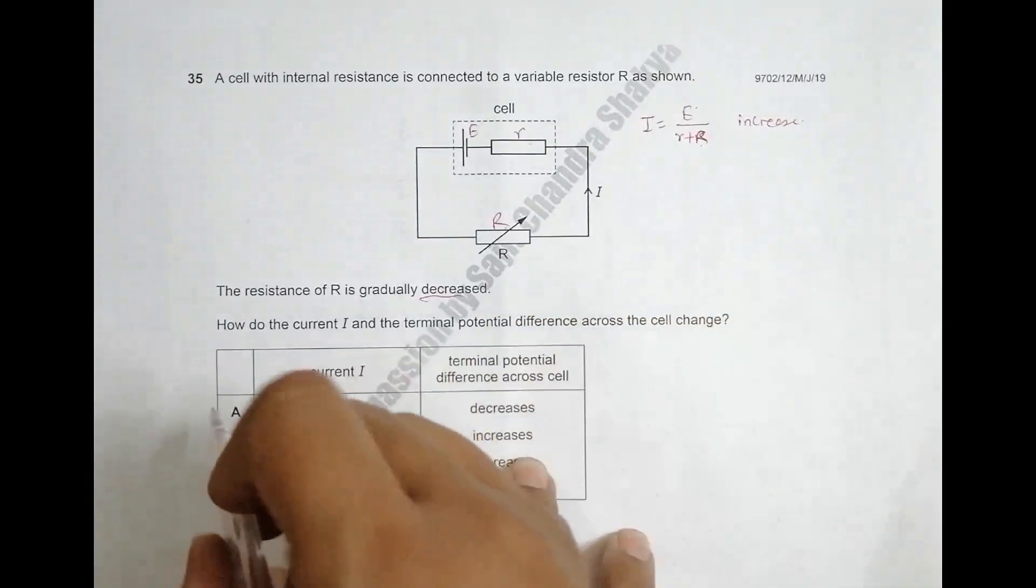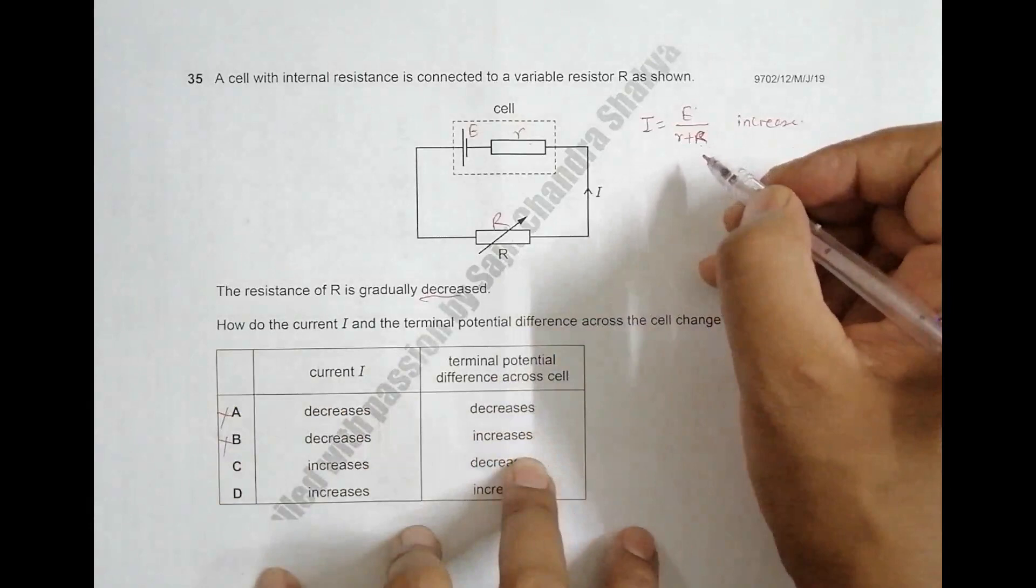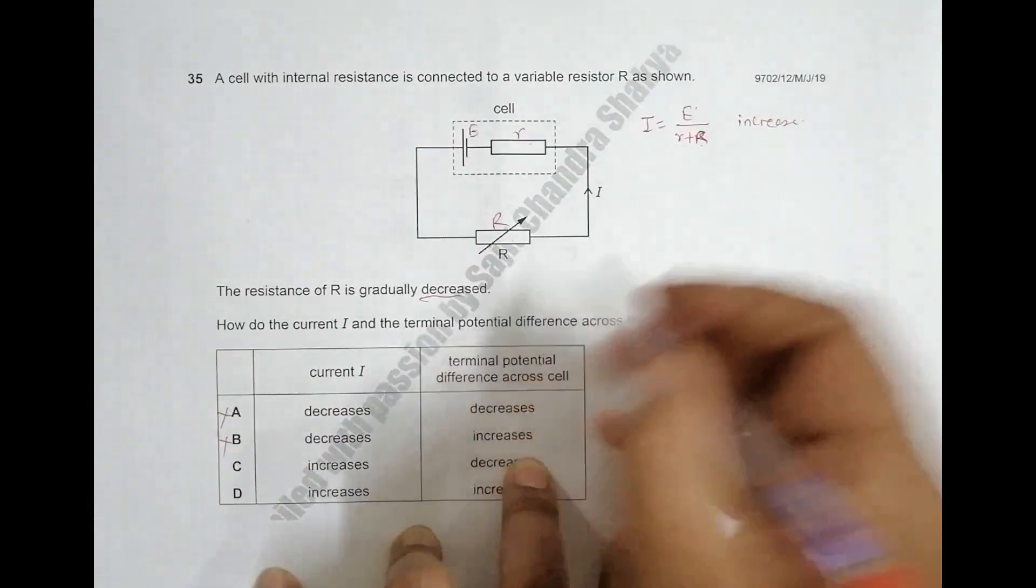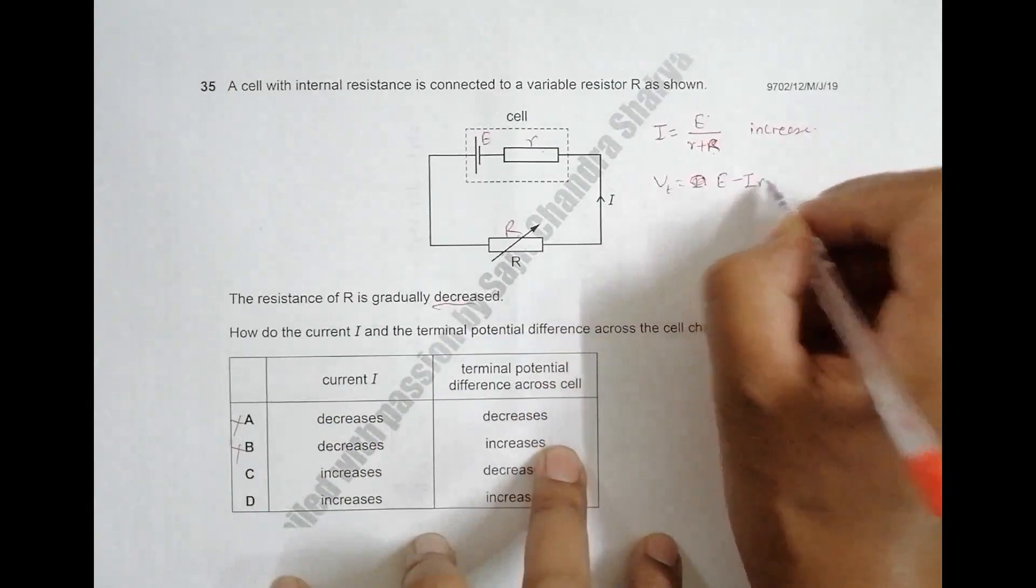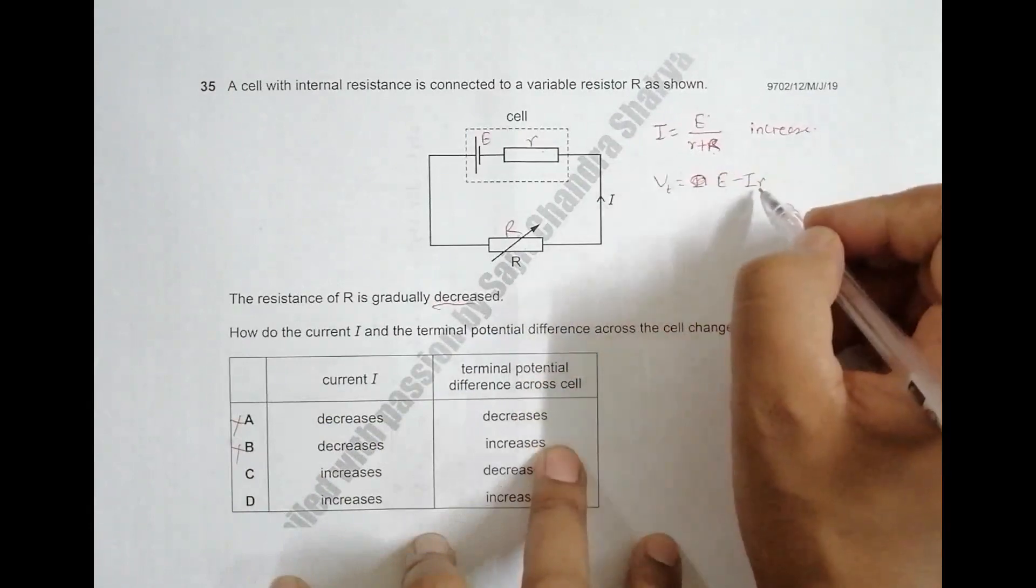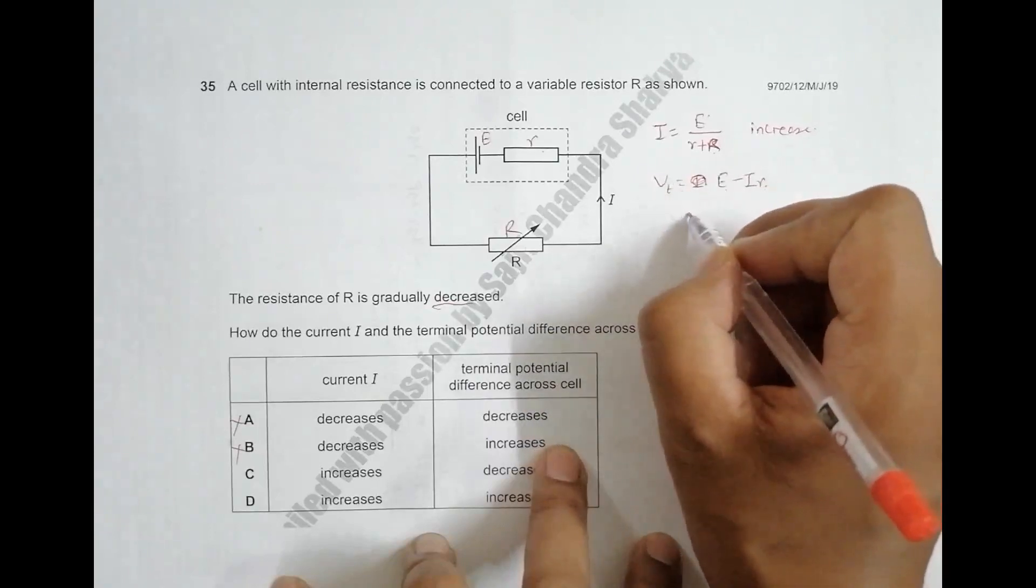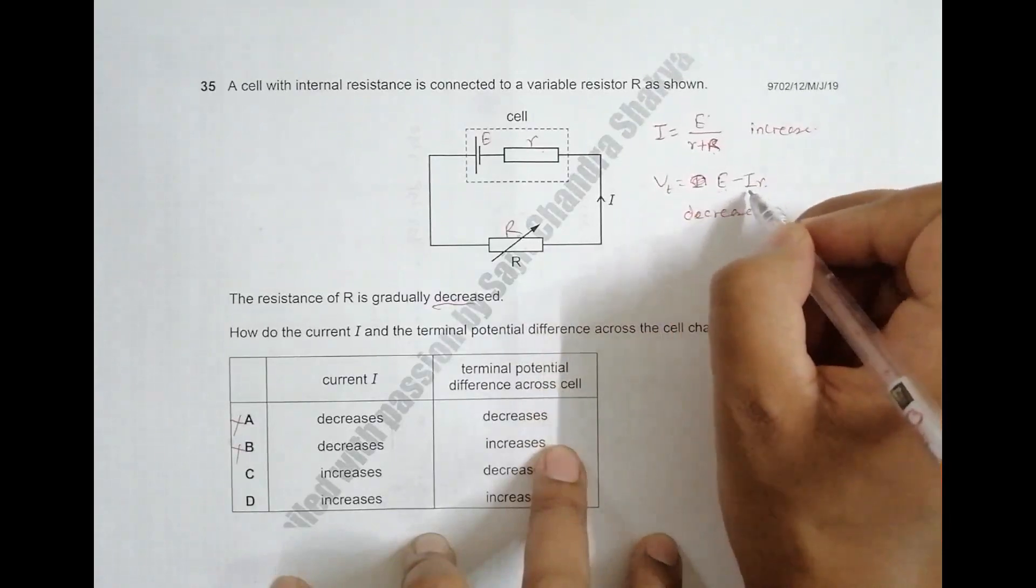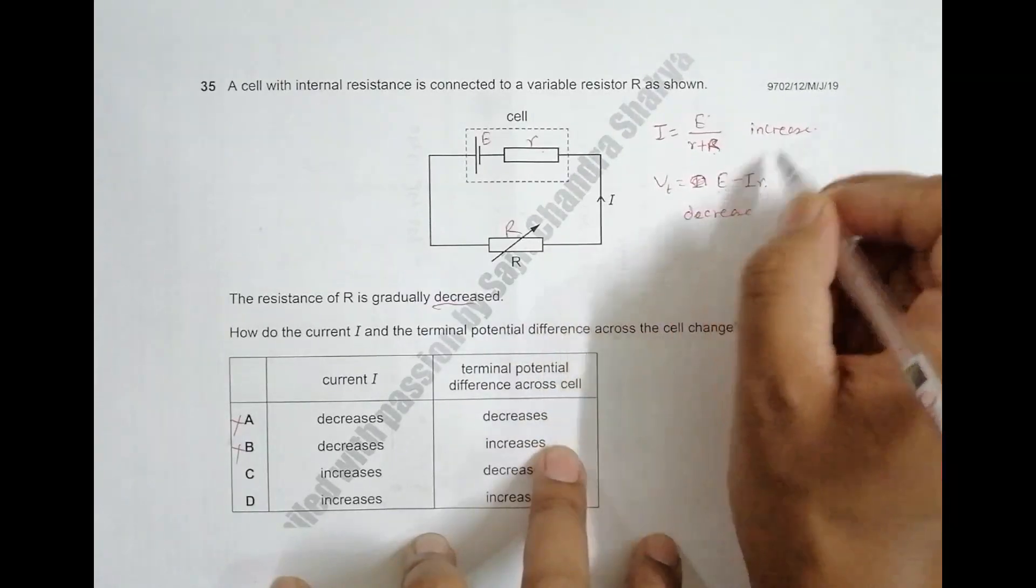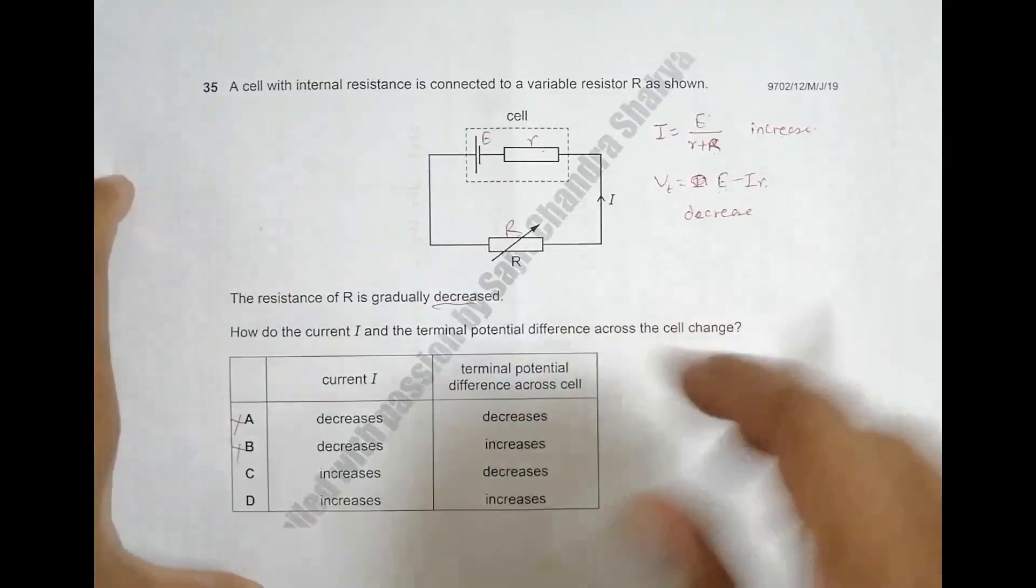Next is the terminal PD, which is equal to E minus I times r. E is constant and r is constant. So since I increases, this term should increase, which means V should decrease because E is the same, r is the same, and only I is increasing. That's why V should decrease.